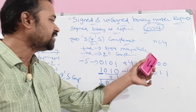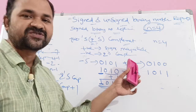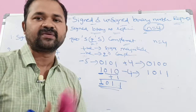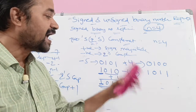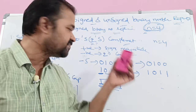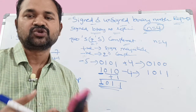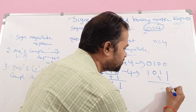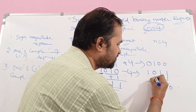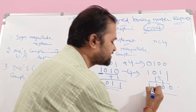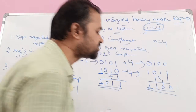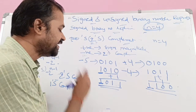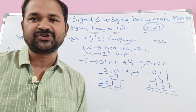For +4 in two's complement notation: positive number, so we use sign magnitude representation — sign bit 0, 4 = 100, giving 0100. For −4: two's complement = one's complement + 1. One's complement of 0100 is 1011. Adding 1: 1011 + 1 = 1100. The first bit (1) is the sign bit indicating negative, and the remaining bits 100 are the magnitude. So −4 in two's complement is 1100.